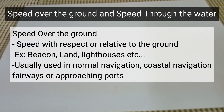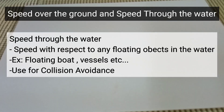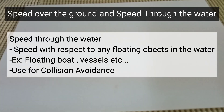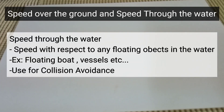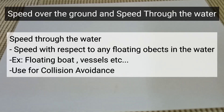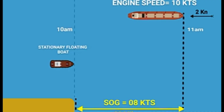Speed through the water is the speed with respect to any floating objects at sea — such as ships and boats. Speed through the water is used for collision avoidance. To understand more the difference between speed over the ground and speed through the water, I will give you a basic and easy example.